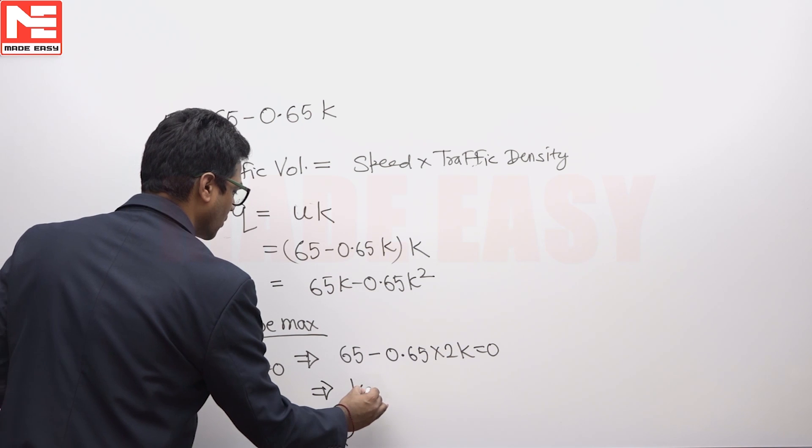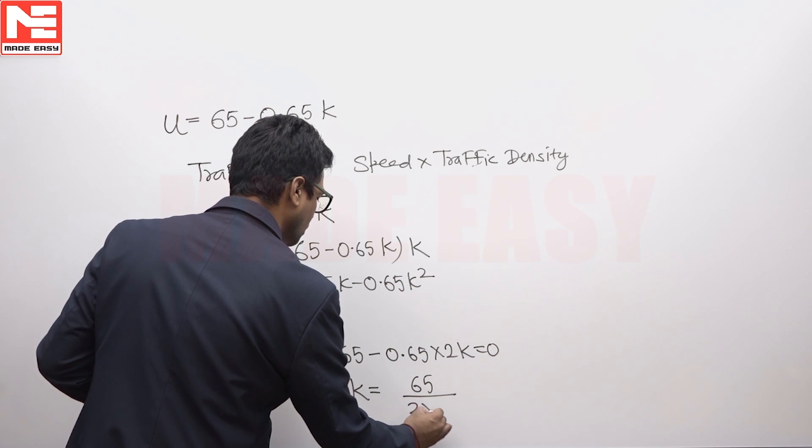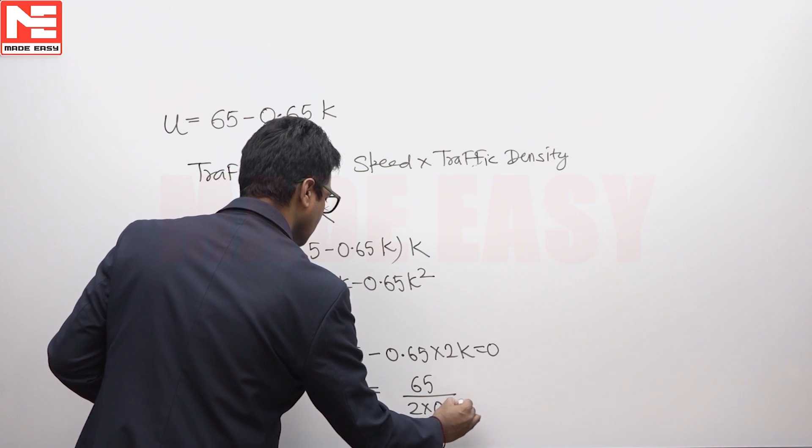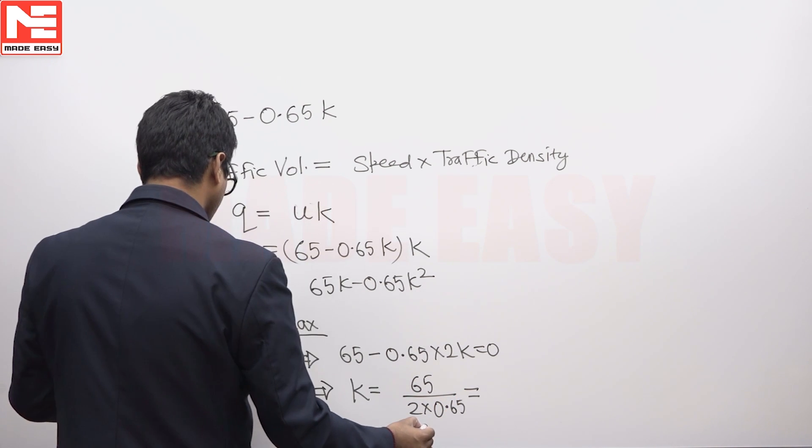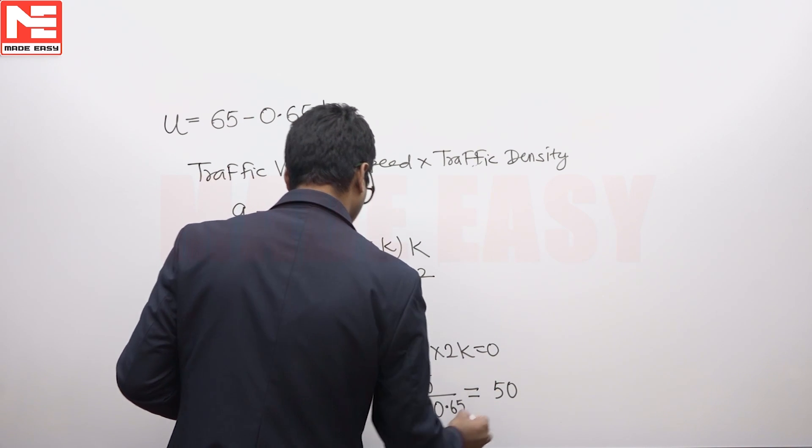Now we can write the value of k equals 65 upon 2 into 0.65, which is coming equal to 50.